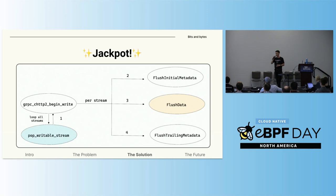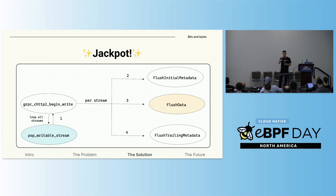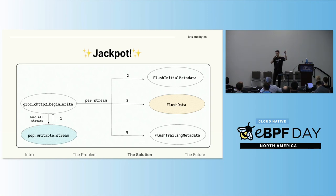Instead, we found a pop_writable_stream function, which is used by begin_write to iterate through the different active gRPC streams. Probing at the end of this function will retrieve, as the return value, the stream struct — the same one that is later passed to flush_data. This struct has stored within it the stream ID and the headers, and from that specific context we can also use it to access the data. And that, just as we dreamed, is everything we searched for in just one probe.